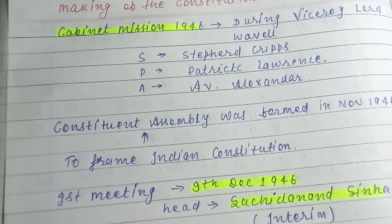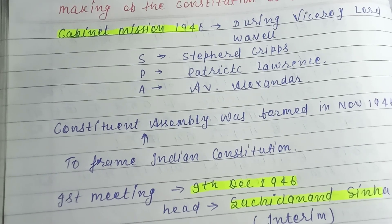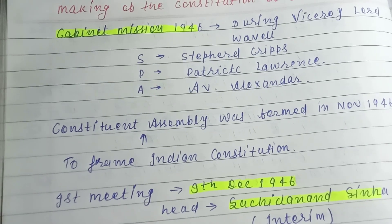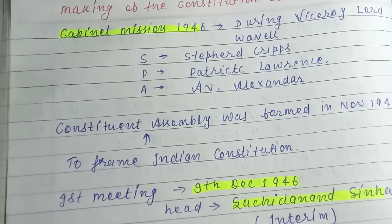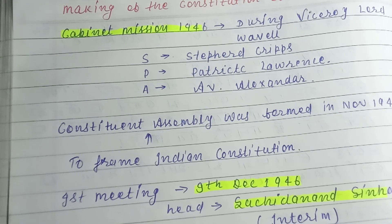When we see the result of our constitution, in 1946, when we saw the Cabinet Mission — that is when the constitution process began.